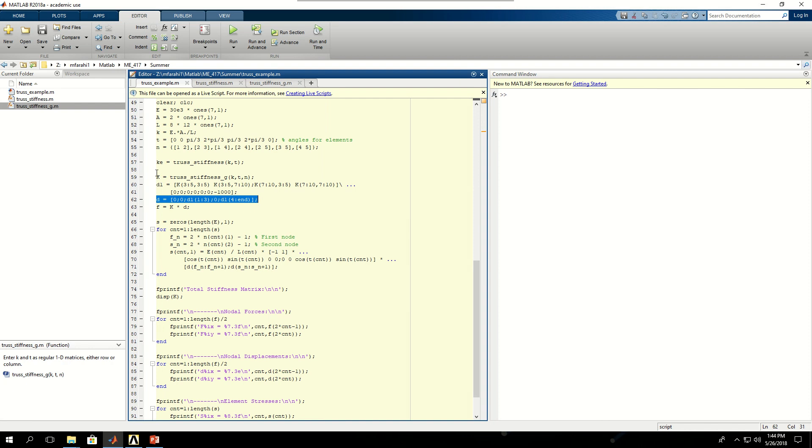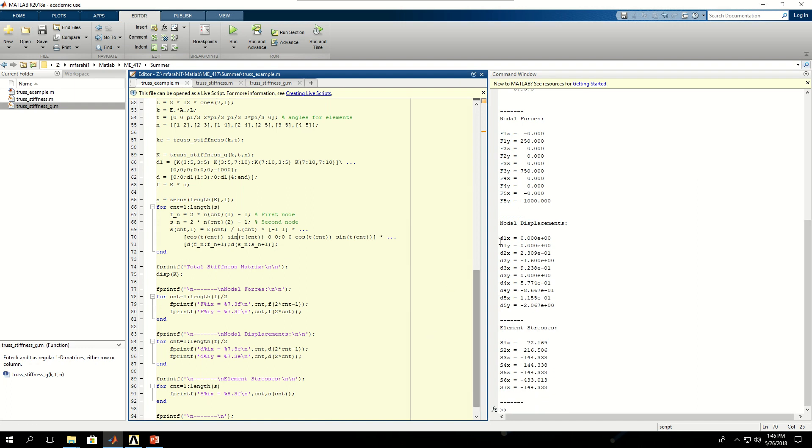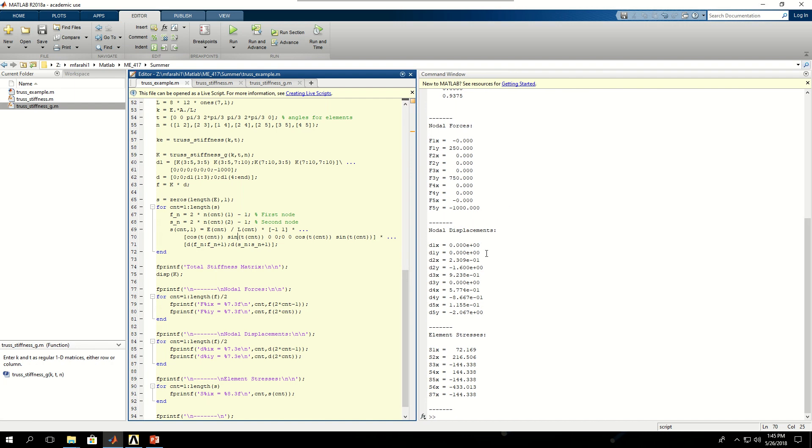And then I use k, the total stiffness matrix, multiplied by that d, and create the nodal forces, or the vector of nodal forces. And then the rest is just printing, except here I'm actually finding the stresses along each element. So if I run this portion of my code, you can see that MATLAB runs the code and puts the output here like that.